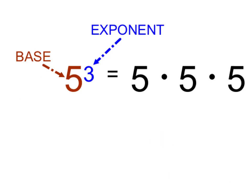Remember, the exponent means how many times the base, 5 in this case, will be multiplied by itself. So, we multiply the 5 by itself 3 times.